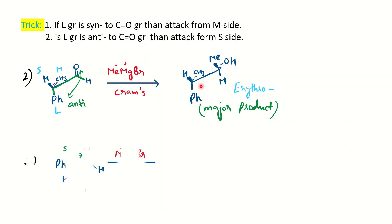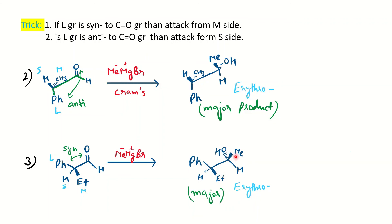Another example for syn: when the large group is syn to the carbonyl, the attack comes from the medium side group. The medium side group is ethyl, so the nucleophile (Me) attacks with the same stereochemistry as ethyl — above the plane. The OH goes on the dashed line. By maintaining the stereochemistry — Ph and H anti in the Newman projection — you can notice ethyl and OH are opposite, giving erythro configuration. So erythro is major in both reactions and threo is minor — a diastereoselective reaction.